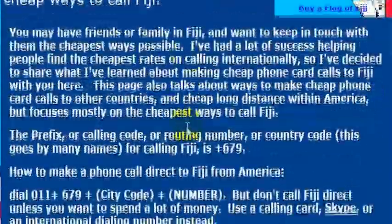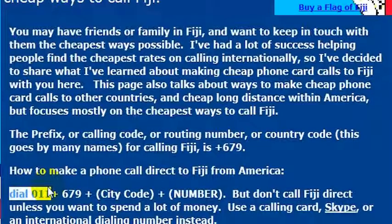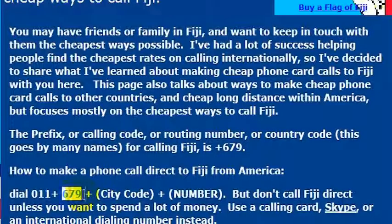You may have friends or family there, or you may be going on vacation there and need to make a phone call. It's easy to do. Simply dial from the United States from any phone that is internationally enabled — a landline usually is, though sometimes cell phones are not. You would dial 011 plus 679. 679 is the country code for Fiji, so you need to know that to make a phone call directly to Fiji.